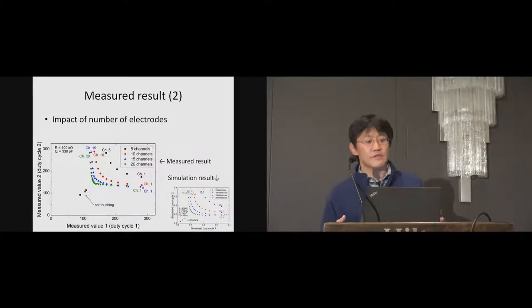This graph shows the impact of the number of electrodes. The trend of measured result is almost the same as simulation result. As you see, it becomes difficult to recognize the touched electrode properly when the number of electrodes becomes larger. So practical range seems up to 10 electrodes.